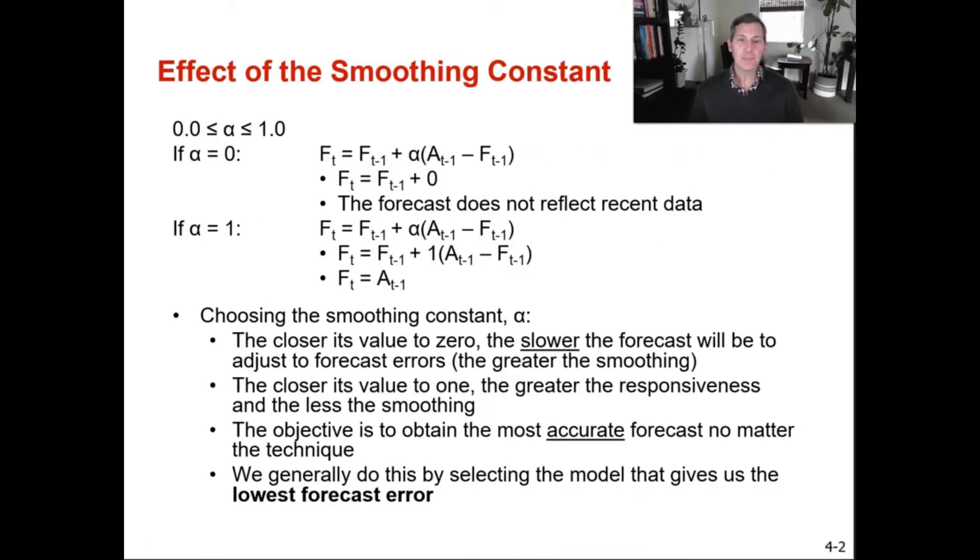Okay, so the effect of the smoothing constant. Let's talk about that alpha for a second. If your alpha is close to zero, you're going to smooth out or get closer to making an average. So if you do that, you choose a low value or a low alpha when your underlying demand or sales are stable. So if you want something to be close to the average, you choose an alpha closer to zero.